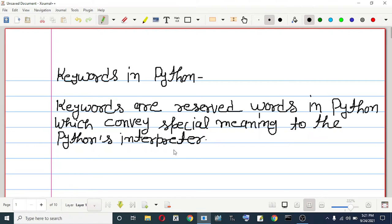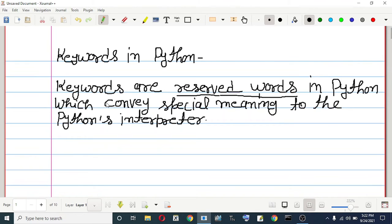Again, I am reading it. Keywords are reserved words in Python which convey special meaning to the Python interpreter. For example: if, else, for, while, false, etc. There are more than 30 keywords in Python; these are few of them.